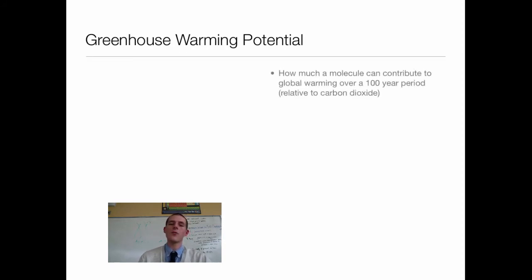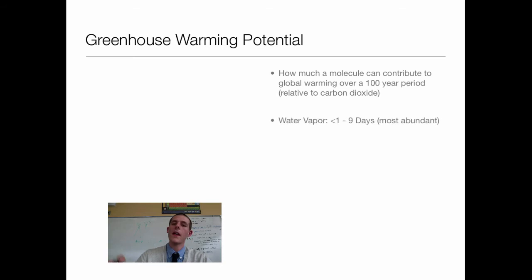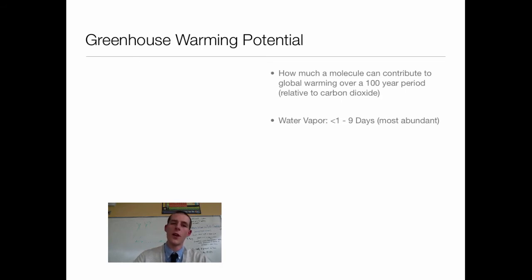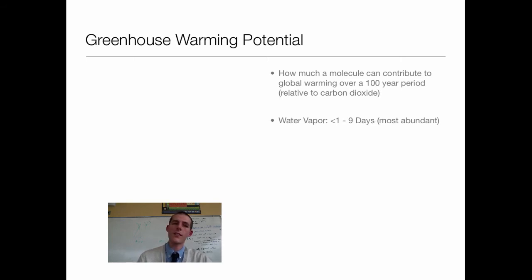Now let's talk about greenhouse warming potential — the actual gases that trap heat. When we talk about greenhouse gases, we mean a specific category of gases that grab that infrared radiation, heat up, and warm the atmosphere. They are compared according to their greenhouse warming potential, which is how much a molecule can contribute to global warming over a 100-year period, compared to carbon dioxide. Water vapor is the most abundant greenhouse gas in the atmosphere and most responsible for our stable temperature, though its warming potential is very low because it doesn't last in the atmosphere very long — it cycles through the water cycle and returns as rain.